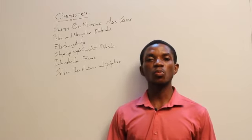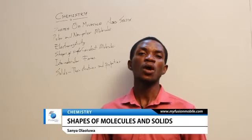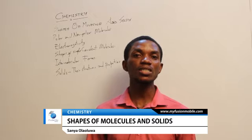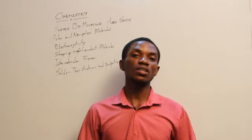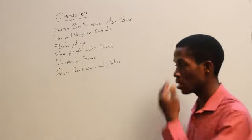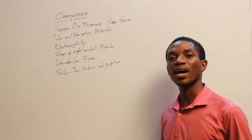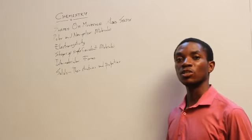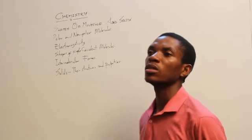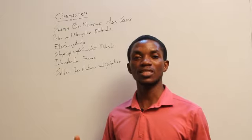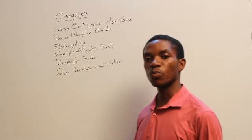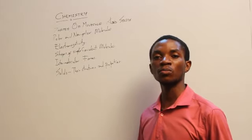When we compare electronegativity to polarity, there is a relationship between them. When elements of different electronegativities bond together — especially the further apart their electronegativities — the more likely they are to form polar substances. Polar substances are joined together via ionic bonds, so there is no electron sharing between them. The further apart the elements are in electronegativity — for example, fluorine and sodium — what they will produce is a polar substance.